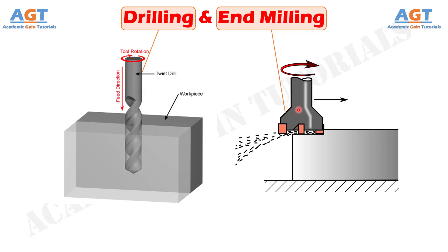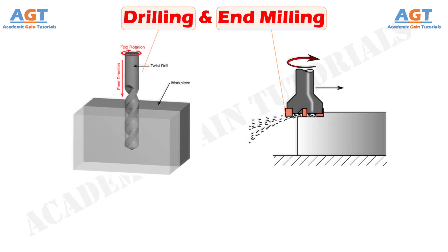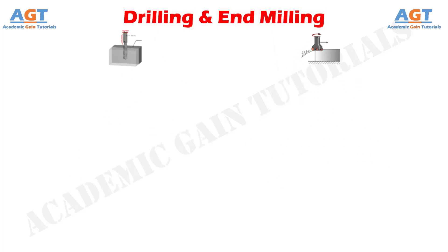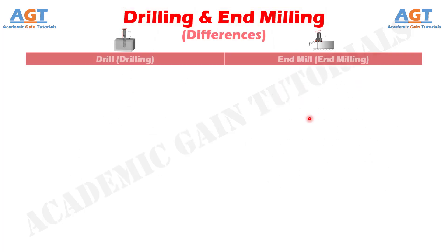End milling is performed to cut features like slot, walls, fins, columns, webs, etc. The cutting tool employed in end milling operation is called end mill. So, let's look into the basic differences between drilling and end milling in a tabular form.